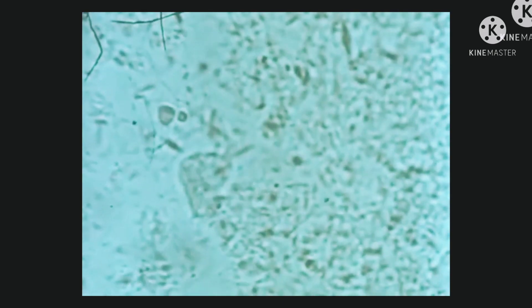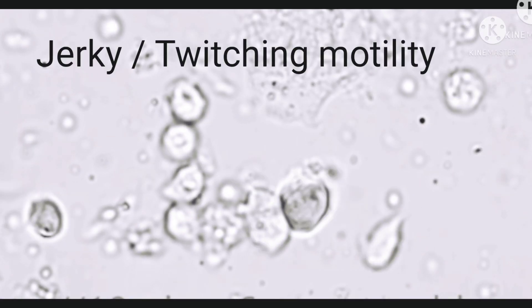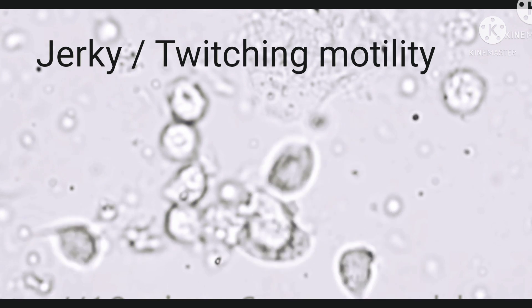Next we have sluggish movement with pseudopodia, which is seen in Entamoeba histolytica. You can see the pseudopodia being extended in different directions — the movement is sluggish and multidirectional. If you look carefully, you can see the ingested red blood cells, which is a characteristic feature to distinguish Entamoeba histolytica from other commensals of the gut.